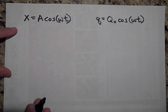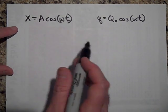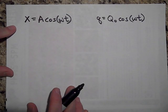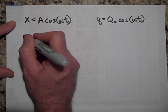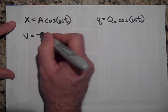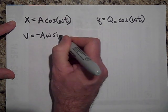So remember with ω, I'll tell you about ω in the next video—this is going to be a two-video topic here. So velocity for the mass in the spring, you just take the derivative of this, so it's going to be negative A ω sine ωt.